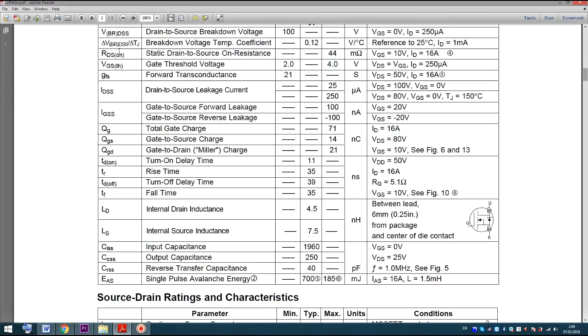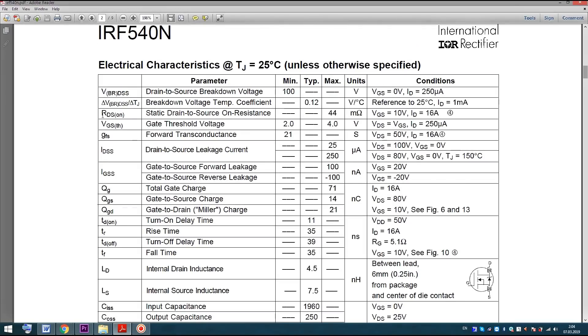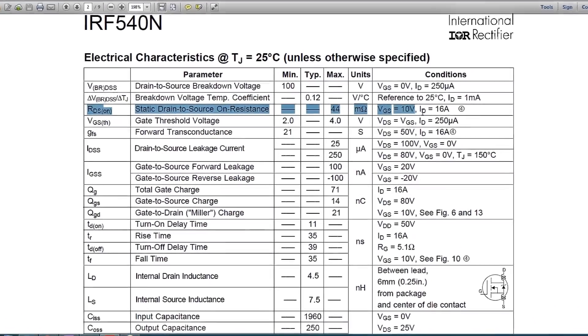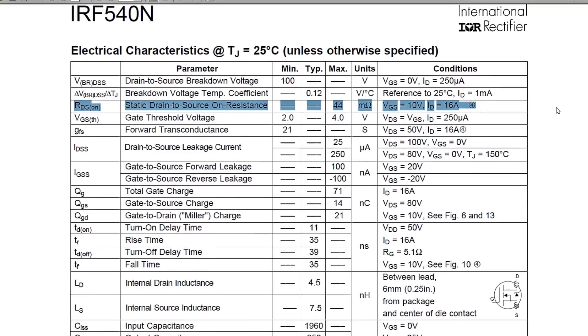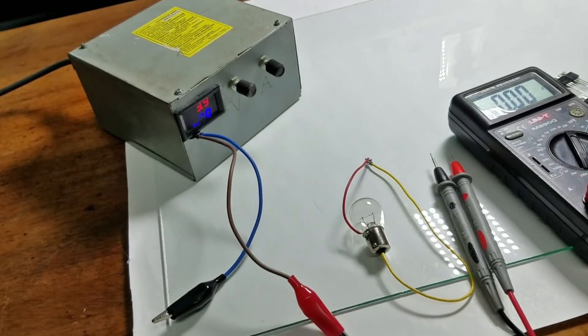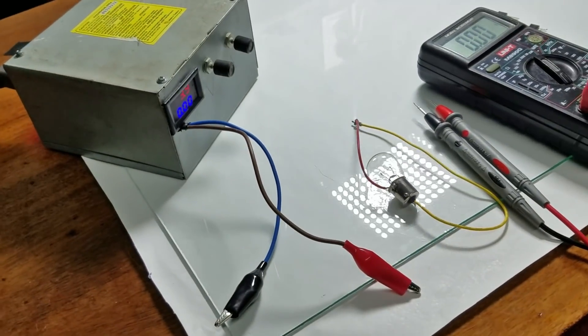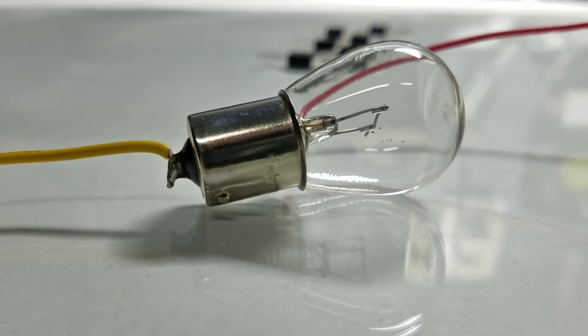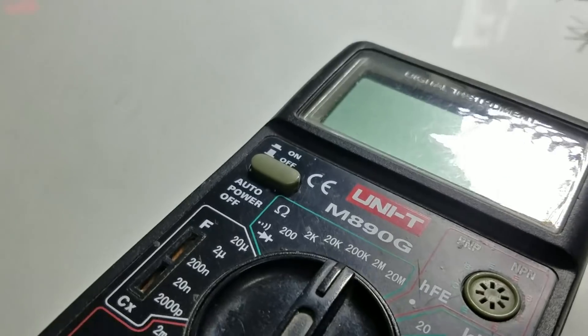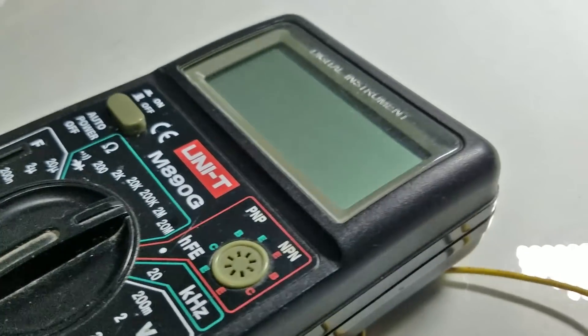To show the difference between real and fake MOSFETs I'll take some measurements, and then I'll calculate drain to source on resistance. In order to take measurements we'll need a 12V DC power supply, a 12V light bulb, and a multimeter to measure current and voltage.